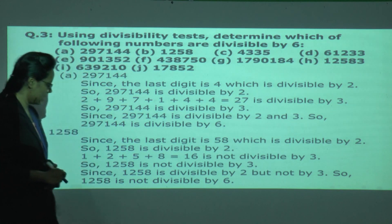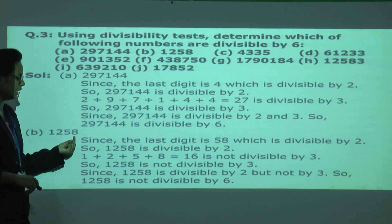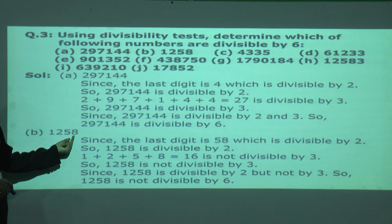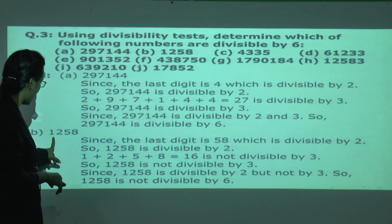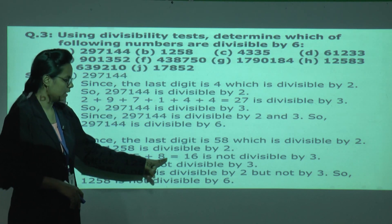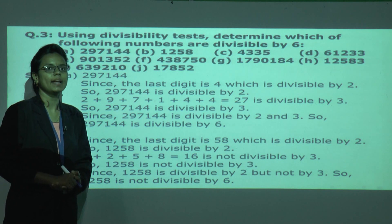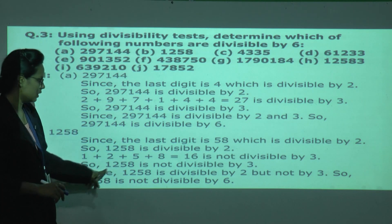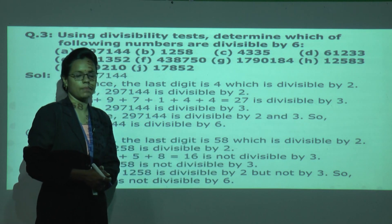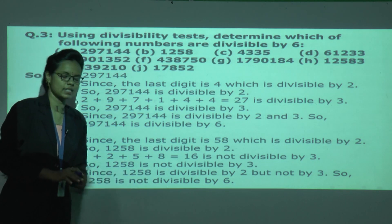The next number is a 4-digit number. It has 8 in its 1's place, so it is divisible by 2. To check for 3, we add: 1 plus 2 plus 5 plus 8 equals 16. Since 16 is not divisible by 3, the number is divisible by 2 but not by 3, so it is not divisible by 6.